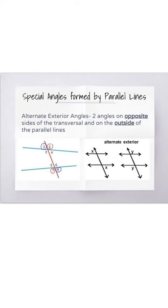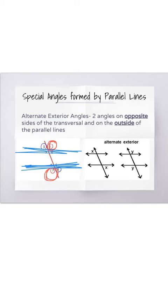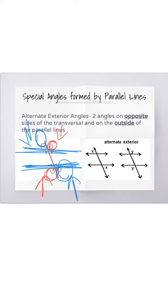For alternate exterior angles, these are two angles that are on the opposite side of the transversal as well, but they are on the outside of the parallel lines. On the left, you have angle number 2 and angle number 7 as alternate exterior angles. Angles 2 and 7 are on the opposite side of the transversal line, and they are on the outside of the parallel lines. Same with number 1 and number 8 — they are on the opposite sides of the transversal line and on the outside of the parallel lines.